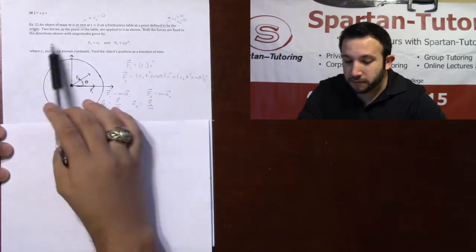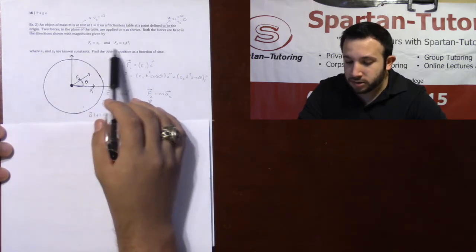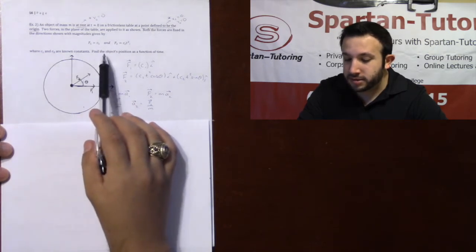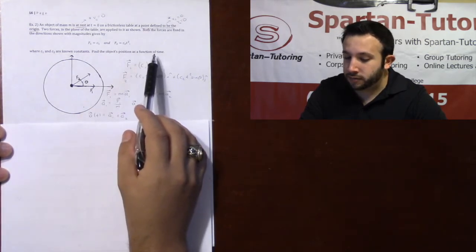Both forces are fixed in the direction shown with the magnitudes given by the following, where c1 and c2 are known constants. Find the object's position as a function of time.